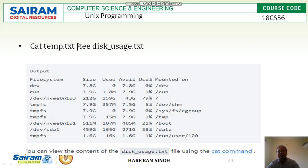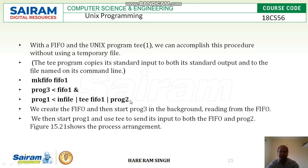For example: cat temp.txt | tee disk_usage.txt. Here, the contents of temp.txt are displayed on standard output, and using the T command, the contents of temp.txt are also sent to disk_usage.txt. So contents of temp.txt are displayed on screen, and if we use the command cat disk_usage.txt, we can see the same output. These are the two advantages we have with the T command.